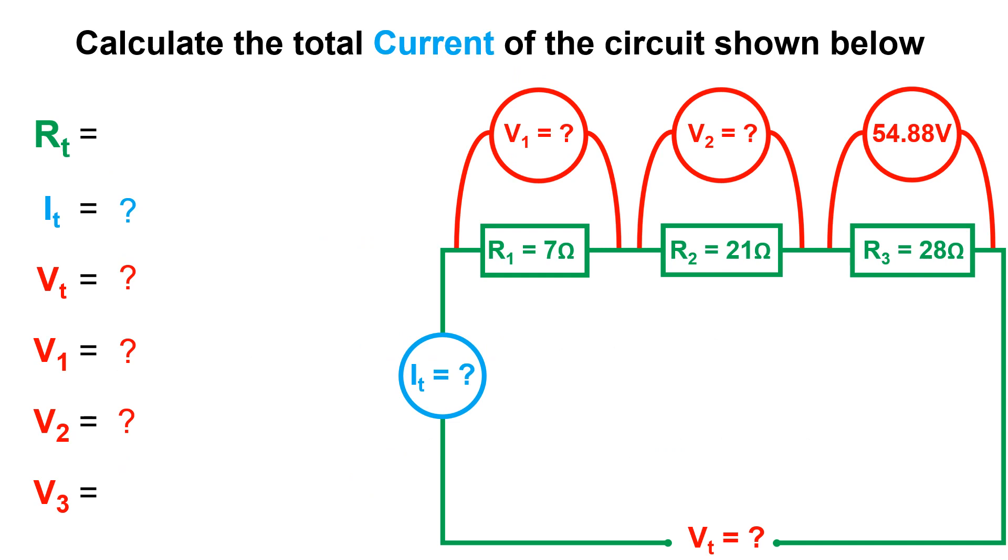This was the example that I gave at the end of the second video. Hopefully you've had a go at this example and we can now go for it together and you can check your method and calculations. If we pull out the information we were given you can see that we do not have the voltage or current total for the circuit but we do have the RT which is found by simply adding 7 ohms, 21 ohms and 28 ohms together and equals a total resistance of 56 ohms.